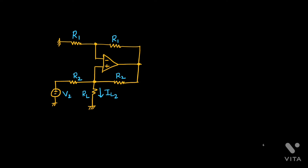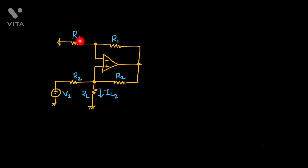To discuss the actual problem, I will first consider two sub-problems. In the first sub-problem, there is one source V2 connected and the other source is not present. I will use general resistances R1, R1 and R2, R2, with load resistance RL. We need to find out the current IL2.